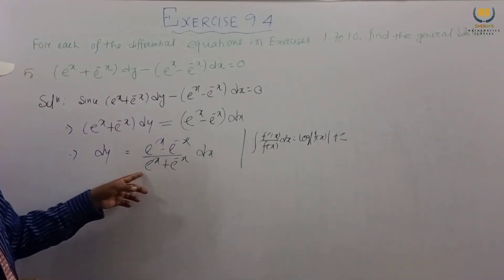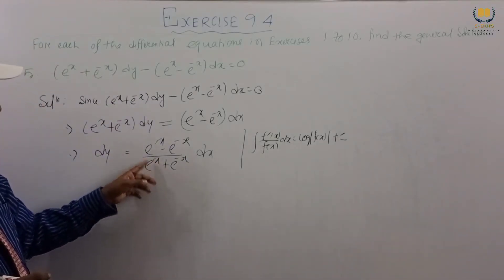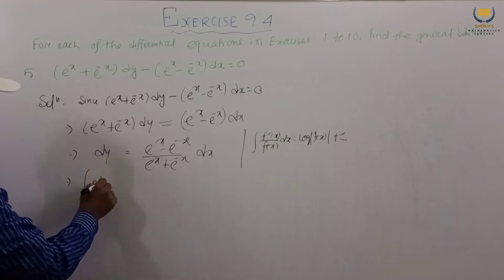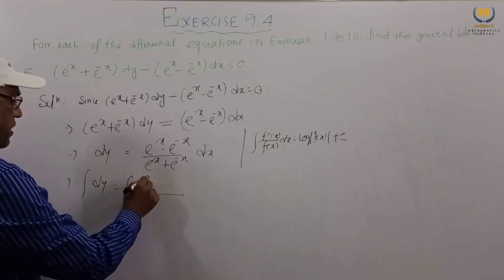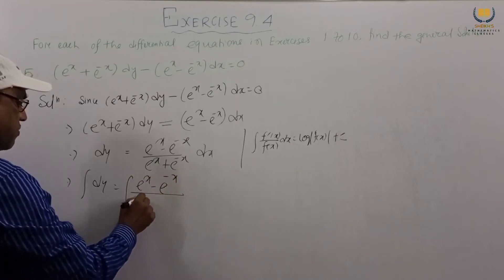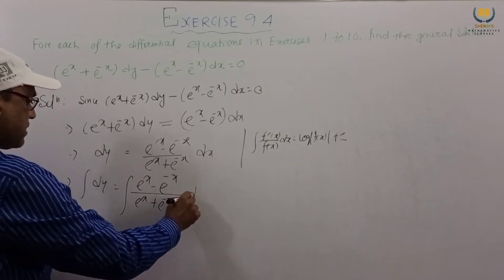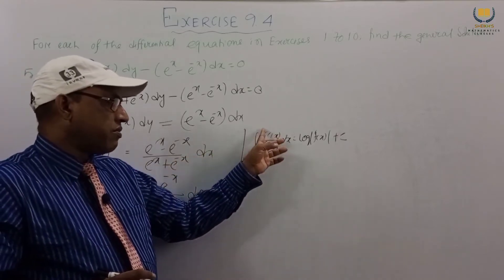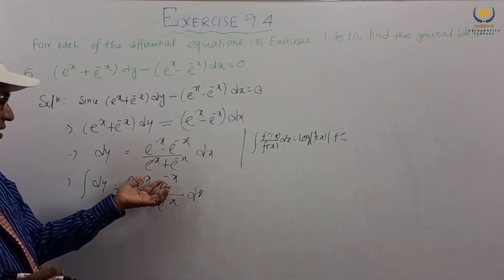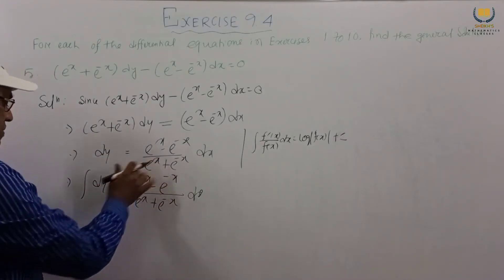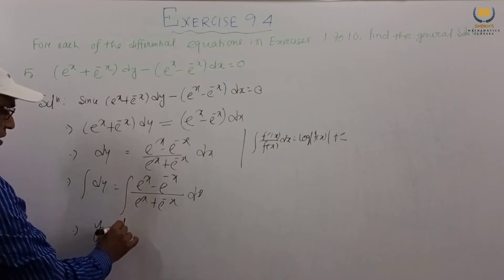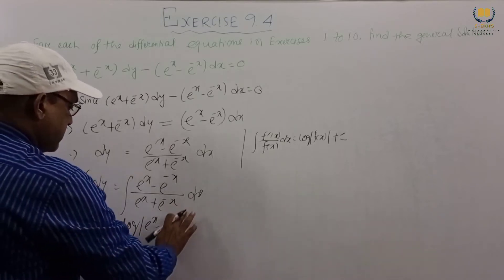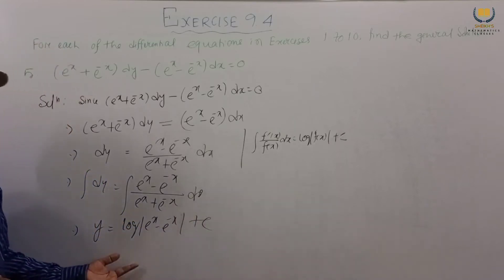If we differentiate (e^x + e^-x), we get (e^x minus e^-x), which is exactly our numerator. So the numerator is f'(x) and the denominator is f(x). Therefore, integrating the left side gives y, and the right side gives log|e^x + e^-x| plus c. This is our final answer.